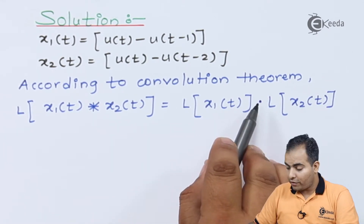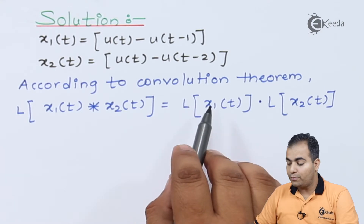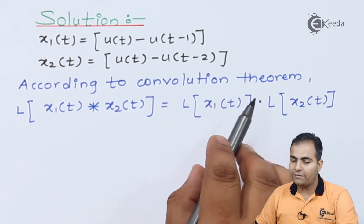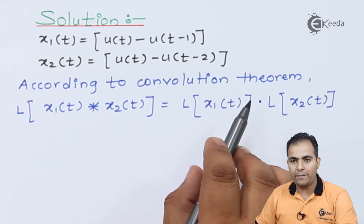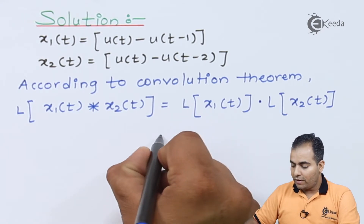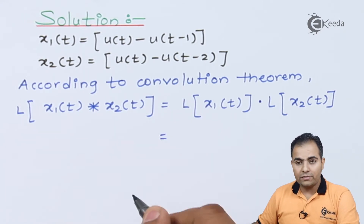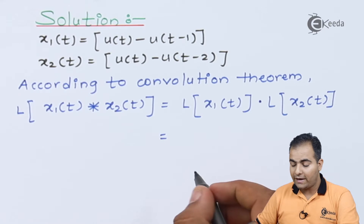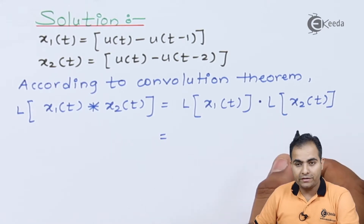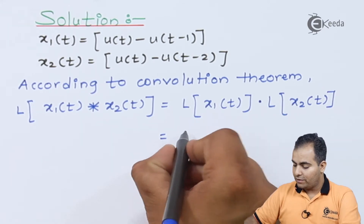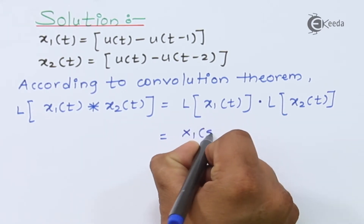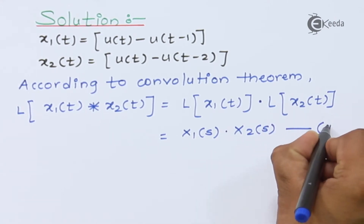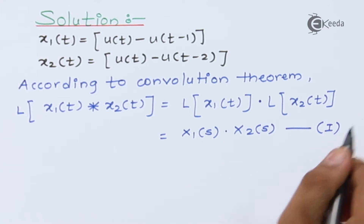It is a product of the Laplace transforms of the two individual signals — we find the Laplace transform of each separately. So the Laplace transform of x1(t) is represented by X1(s) and x2(t) is represented by X2(s). Let us call this equation number 1.